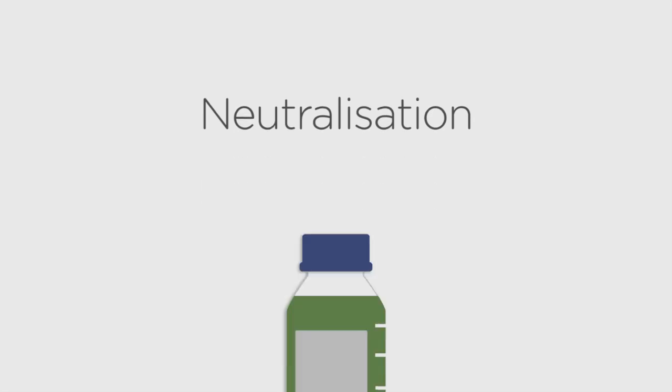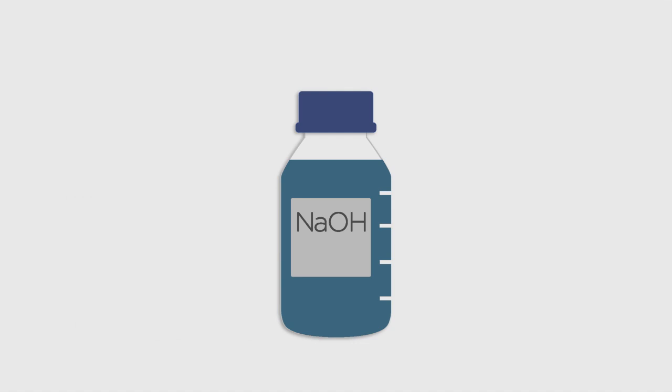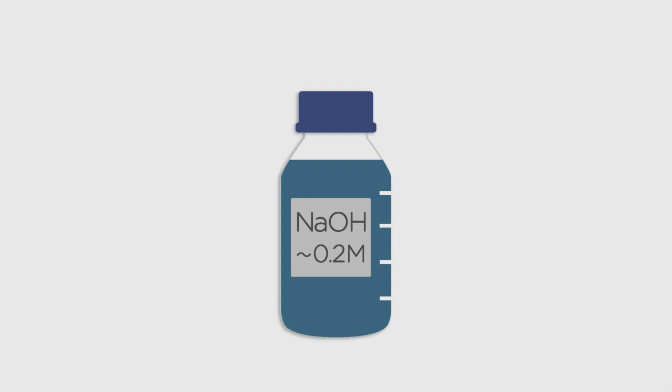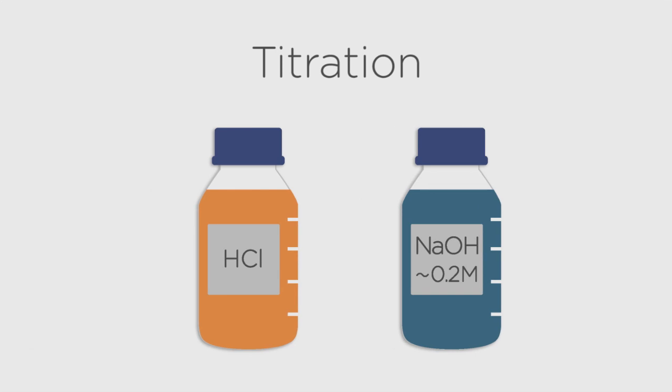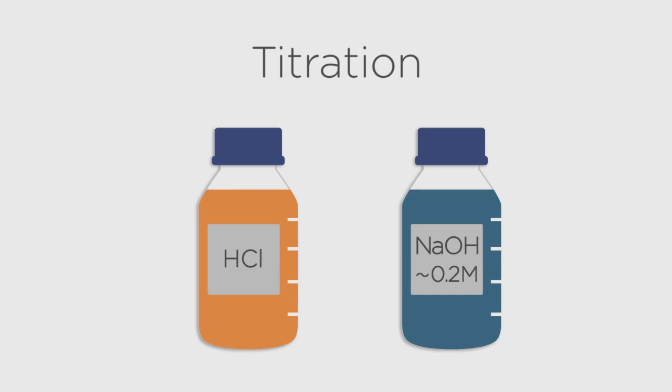When we have solutions of chemicals in the lab, it's often really important to know their molarity as precisely as possible. So say we had some old sodium hydroxide solution that we knew was about 0.2 molar. We could get a much more precise figure than this by titrating it with some hydrochloric acid that we do already know the precise molarity of. Here's a video all about titration if you've not heard of that term before.